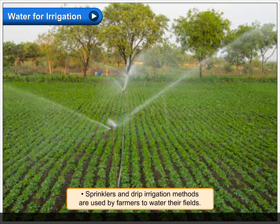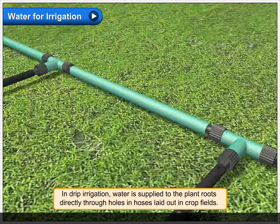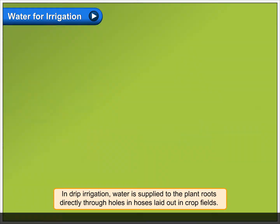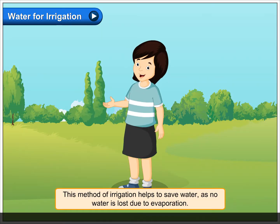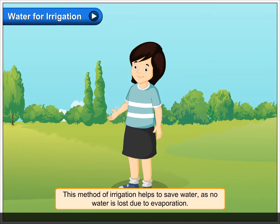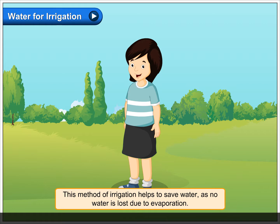Sprinklers and drip irrigation methods are used by farmers to water their fields. In drip irrigation, water is supplied to the plant roots directly through holes and hoses laid out in crop fields. This method of irrigation helps to save water as no water is lost due to evaporation.